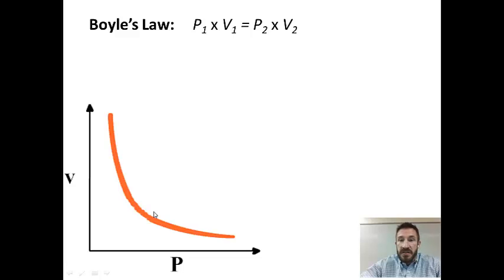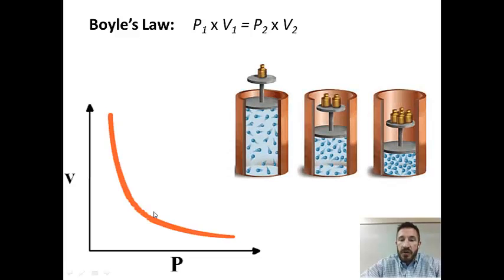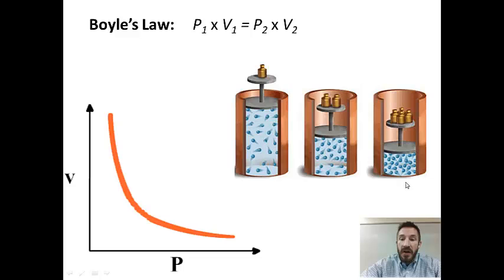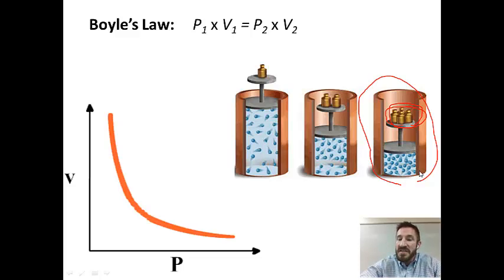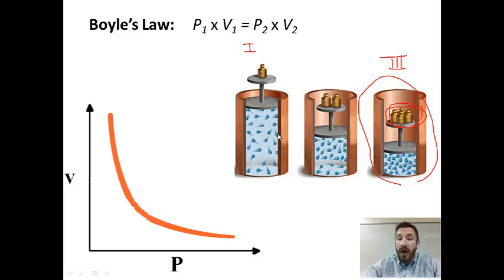Boyle's Law is P1V1 = P2V2, because number of moles and temperature are held constant. A drawing with weights illustrates this: as we increase the number of weights, increasing the pressure, the volume gets smaller. In the final container, the gas particles collide with the side of the container much more often. The speed is the same because temperature hasn't changed, but there are more particles per volume, so they hit the sides more frequently.